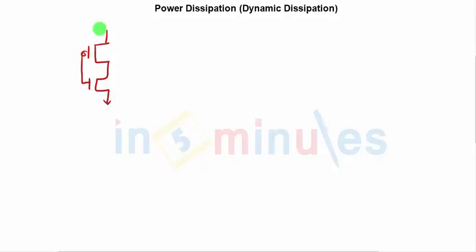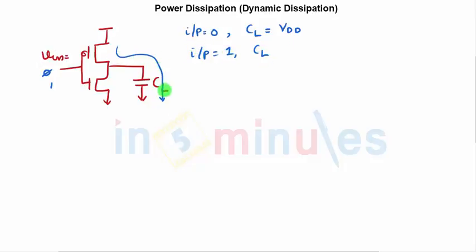So this is my CMOS inverter again. This is my load capacitance which was not shown in static because we assumed that the output was steady or quiescent and this was my input. Let's say my input was initially 0. If my input was 0 I can say that my load capacitance got charged to V_DD. After that my input goes to 1 that means my load capacitance initially got charged to V_DD after which it got discharged. C_L went to 0 correct.